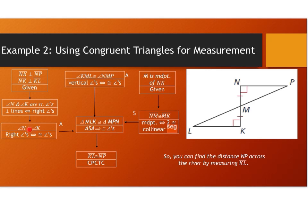We can then conclude that angle N is congruent to angle K, because right angles imply congruent angles. We know that M is the midpoint of side NK, which is given. That allows us to conclude that side NM is congruent to side MK, because a midpoint implies two congruent collinear segments. Keeping track of all congruent sides and angles, we have angle, angle, side.